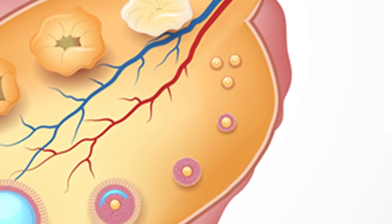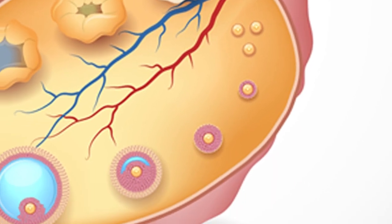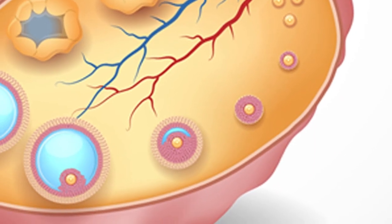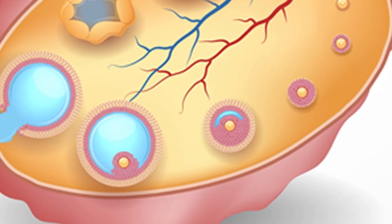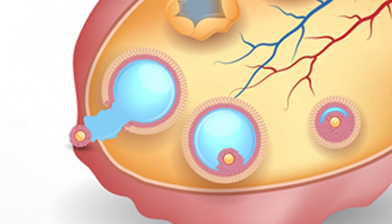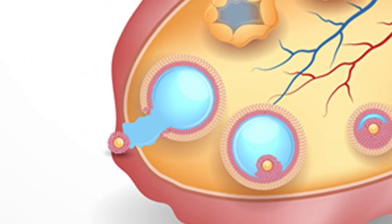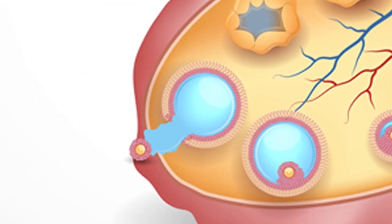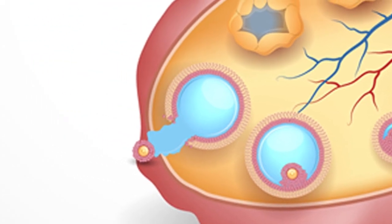Once the five to seven follicles are recruited, the fluid-filled sac around them begins to grow. This causes estrogen and the feeling of wetness to increase.